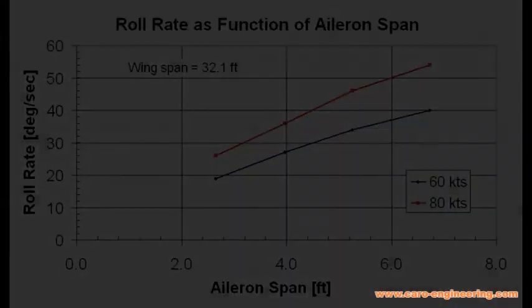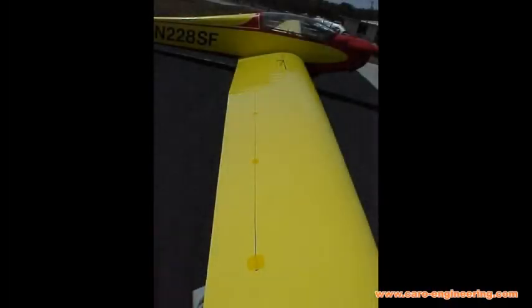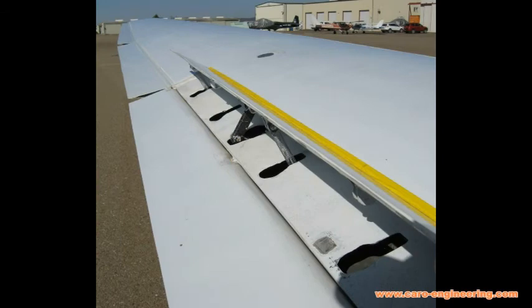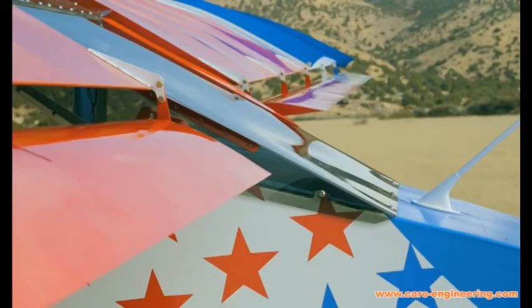Gliders without flaps make use of long ailerons to get the necessary roll control. Even higher roll rates are achieved on gliders with flaps, where the functions are combined into flapperons. Flapperons are full span ailerons that also move up and down as flaps. Flaperons are even used on some small airplanes, as shown here on the Skidfox.